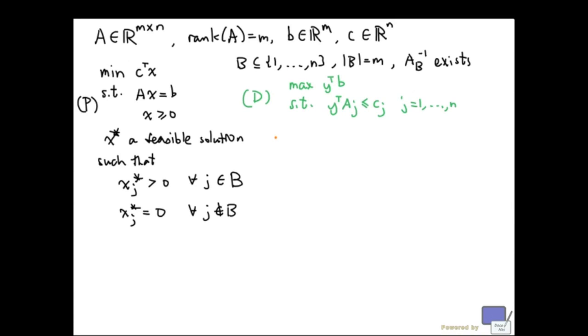We are going to have the same setup as the previous video. Here A is an n by n matrix with full row rank, B is an n vector, C is an n vector. And the problem we are looking at is minimize C transpose x subject to A x equal to b, x greater than or equal to 0.